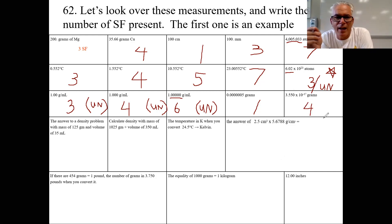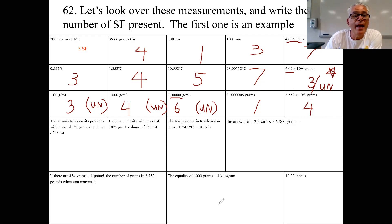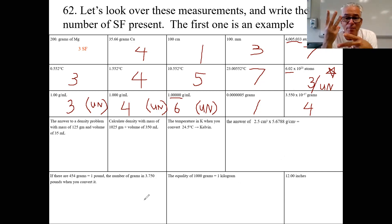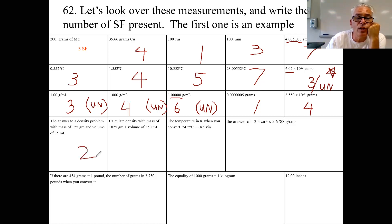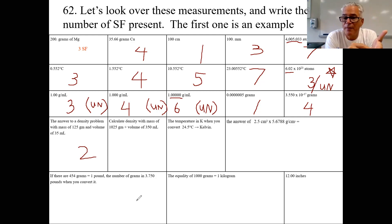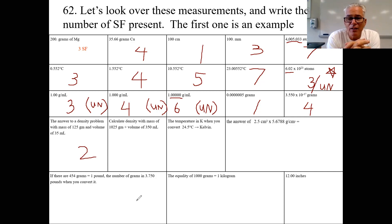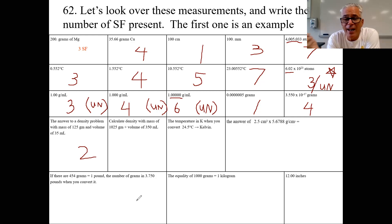In math problems there are rules. If your measurement is 125 grams divided by 35 mL, you have three significant figures divided by two significant figures. Your answer is limited to just two significant figures. No matter what the calculator says, you must round to two significant figures. If you want a better density, you need better measurements — your calculator thinks you're doing math, but you're doing measurement math, which has additional rules.